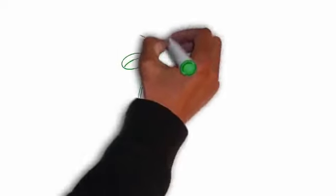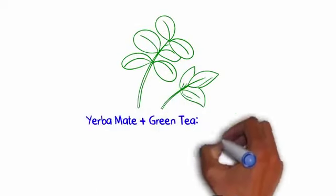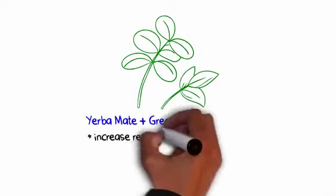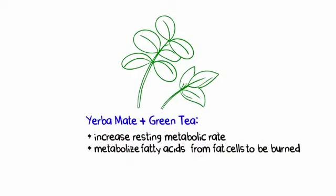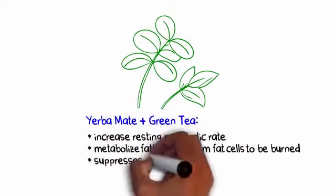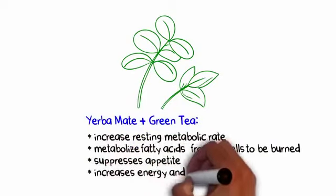And finally, to further enhance the fat-burning effects of leptiburn, we've included potent natural extracts of yerba mate and green tea, which have also been shown to increase resting metabolic rate and metabolize fatty acids from fat cells to be burned, all while suppressing appetite and increasing energy and alertness.